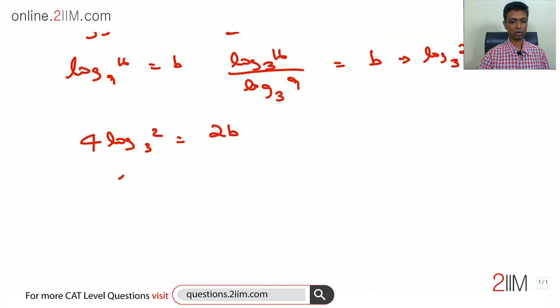Is 2b, or log 2 to the base 3 is b by 2. We know that log 3 to the base 2 should be equal to 2 by b.